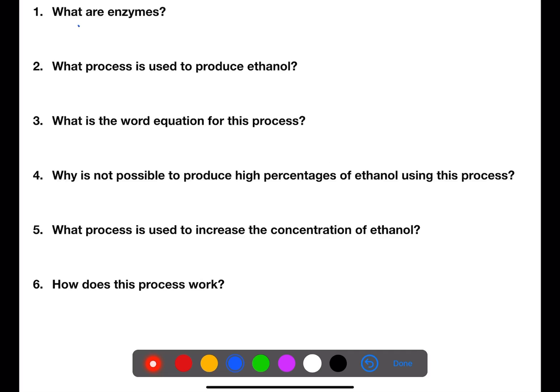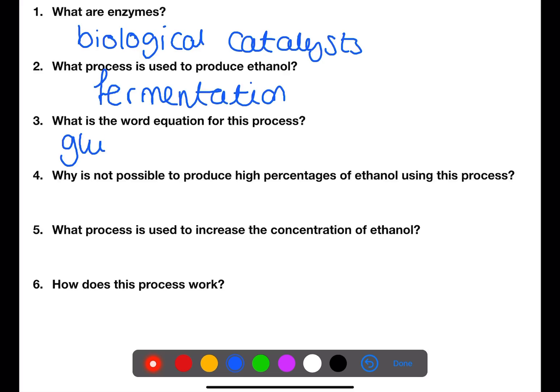Enzymes are biological catalysts. The process used to produce ethanol is called fermentation. The word equation for this process is glucose with yeast as a catalyst to produce ethanol and carbon dioxide.